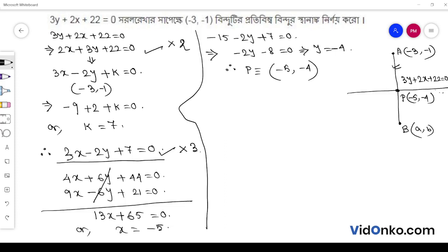So the statement is minus 5 comma minus 4. Now, I have to say, A plus minus 3 by 2, and it is equal to minus 5, and B plus minus 1 by 2, and this is equal to minus 4.